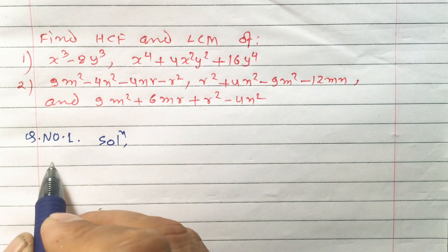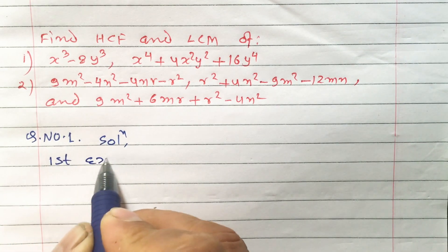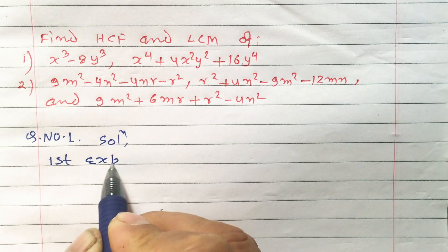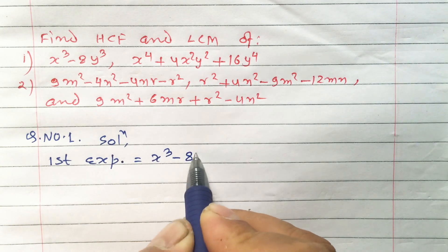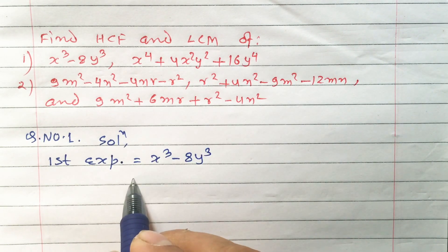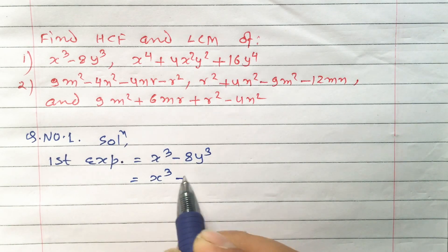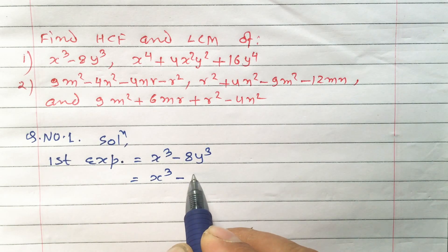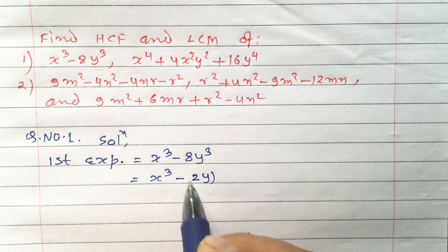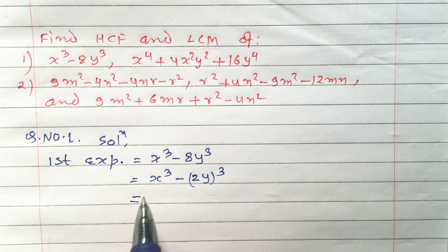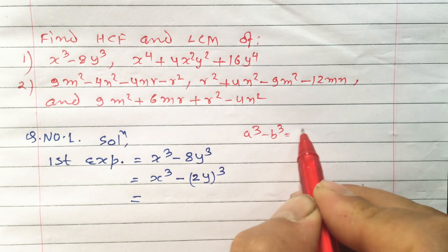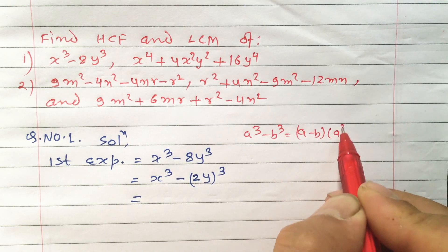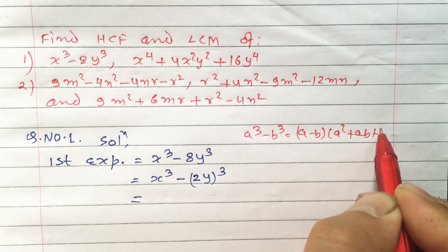First of all, the first expression we can write as x cube minus 8y cube. We can apply the formula since 8 means 2 cube and y means 2y whole cube. Now we can apply the formula of a cube minus b cube. The formula is: a cube minus b cube equals to a minus b times a square plus ab plus b square.